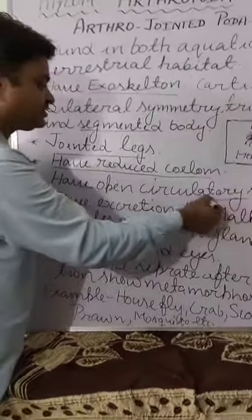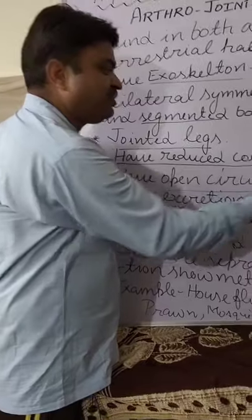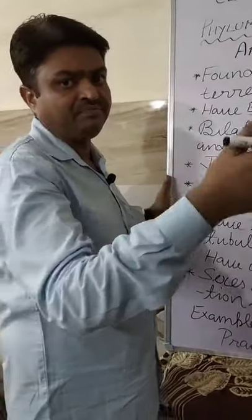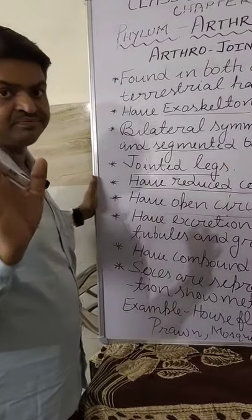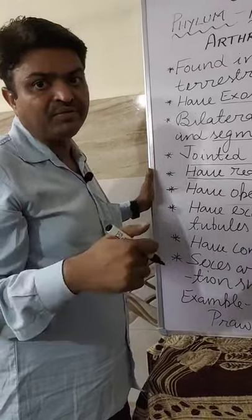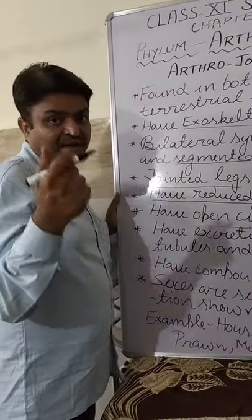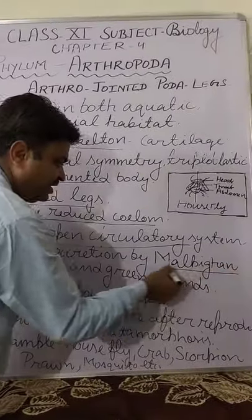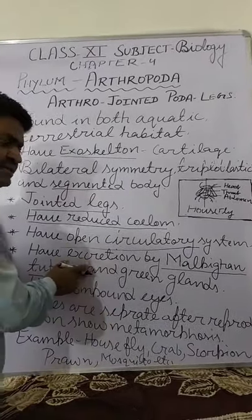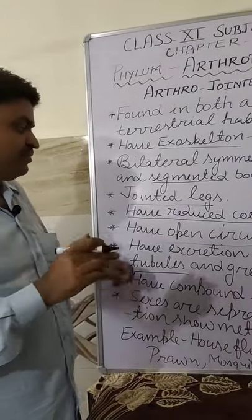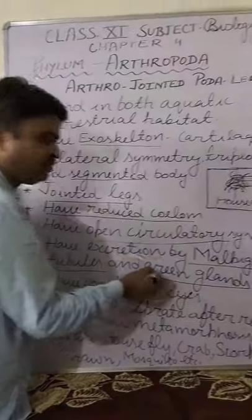They have an open circulatory system. What does open circulatory system mean? They don't have blood vessels; they directly supply their blood into their cells. For respiration, they do respiration with the help of trachea. For excretion, they have particular organs known as malpighian tubes — like annelida does excretion with nephridia, arthropods do excretion with malpighian tubes. Other insects like crab or prawn do excretion with the help of green glands.